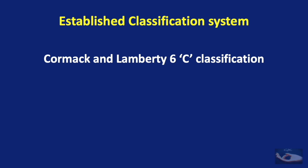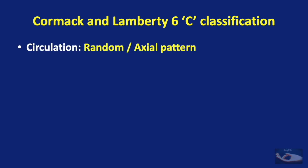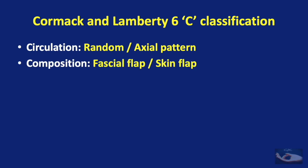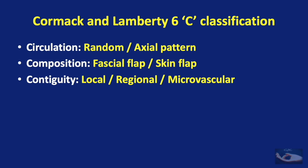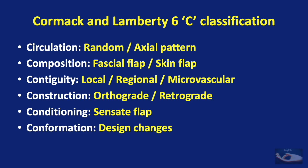Today we shall try to understand the intrinsic flaps in the hand based on the Cormac and Lamberti's 6C classification. This consists of classification according to: circulation (random or axial pattern flap); composition of the flap (fascial or skin flap); contiguity (local, regional, or microvascular); construction (whether blood flow is orthograde or retrograde); conditioning of the flap (some flaps are sensate); and conformation, which refers to changes in the design of the flap.